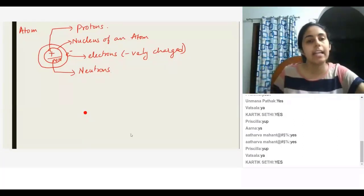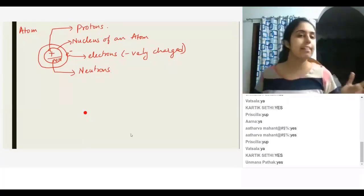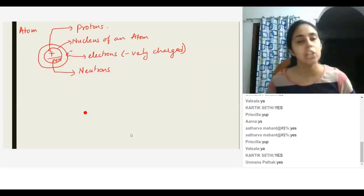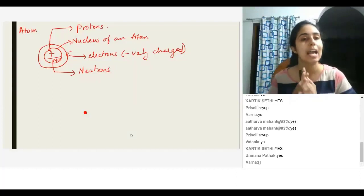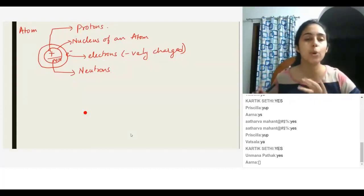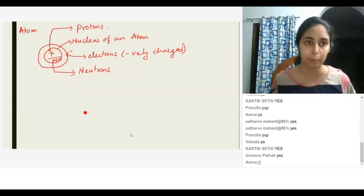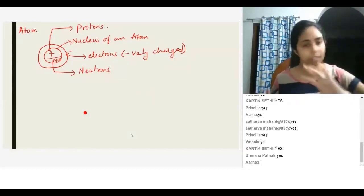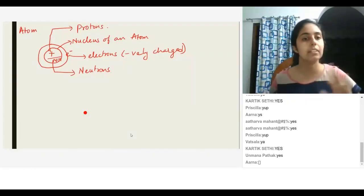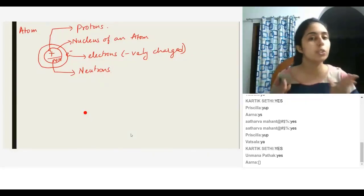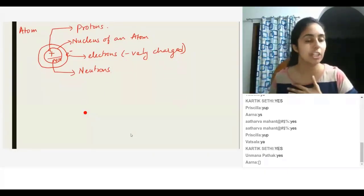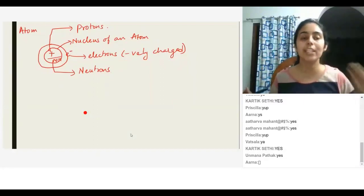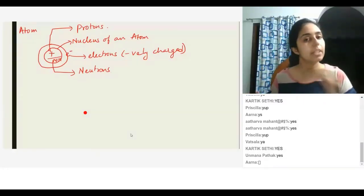So now this is the general structure of any atom. Let's look at what are the different types of atoms. Every element has its own unique structure of an atom. Hydrogen has a different structure—it's basically the same, but the number of protons, neutrons, and electrons will keep changing. Every element has a unique structure of an atom, with the number of either protons or electrons changing.